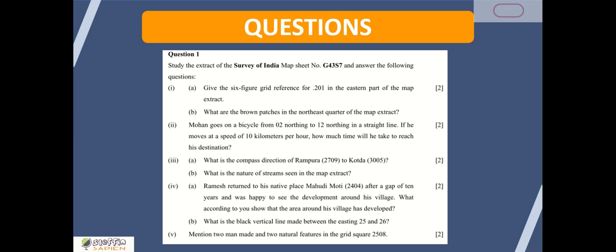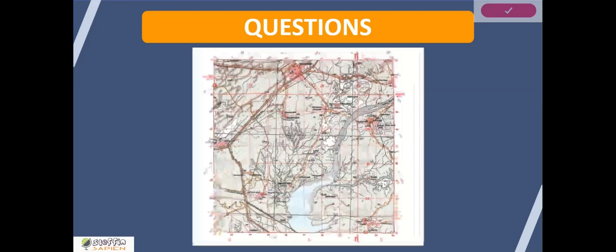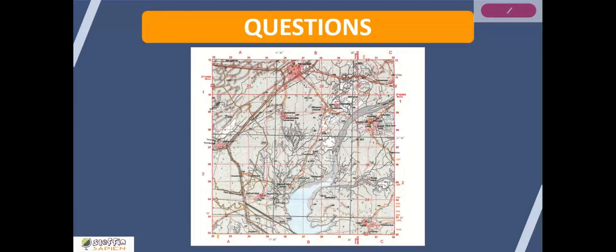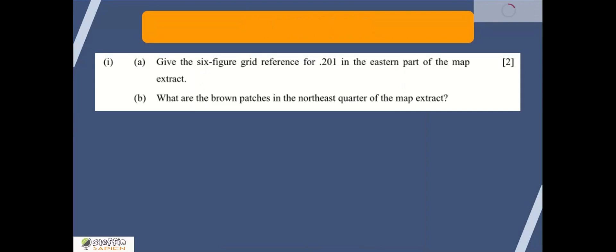The Survey of India map sheet given for this question paper is G43 S7. You will get a full size A3 topographical map which also contains all the marginal information like scale, conventional signs and symbols and other information related to the topography. Now let's start with the first question.